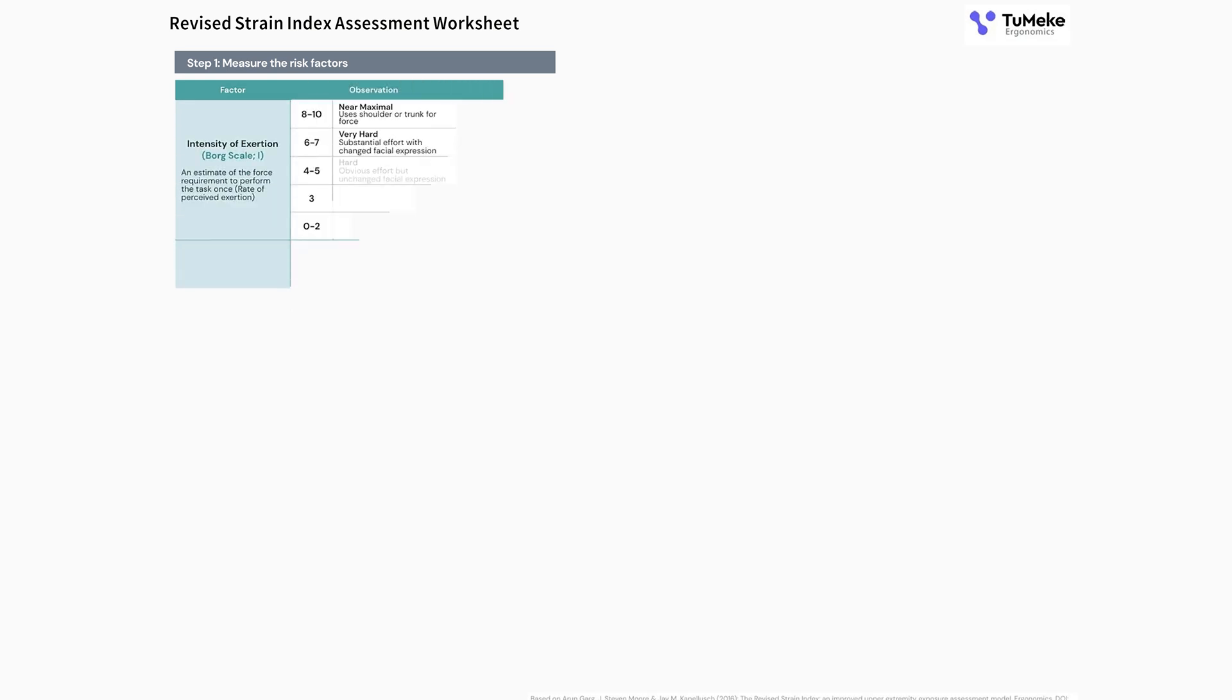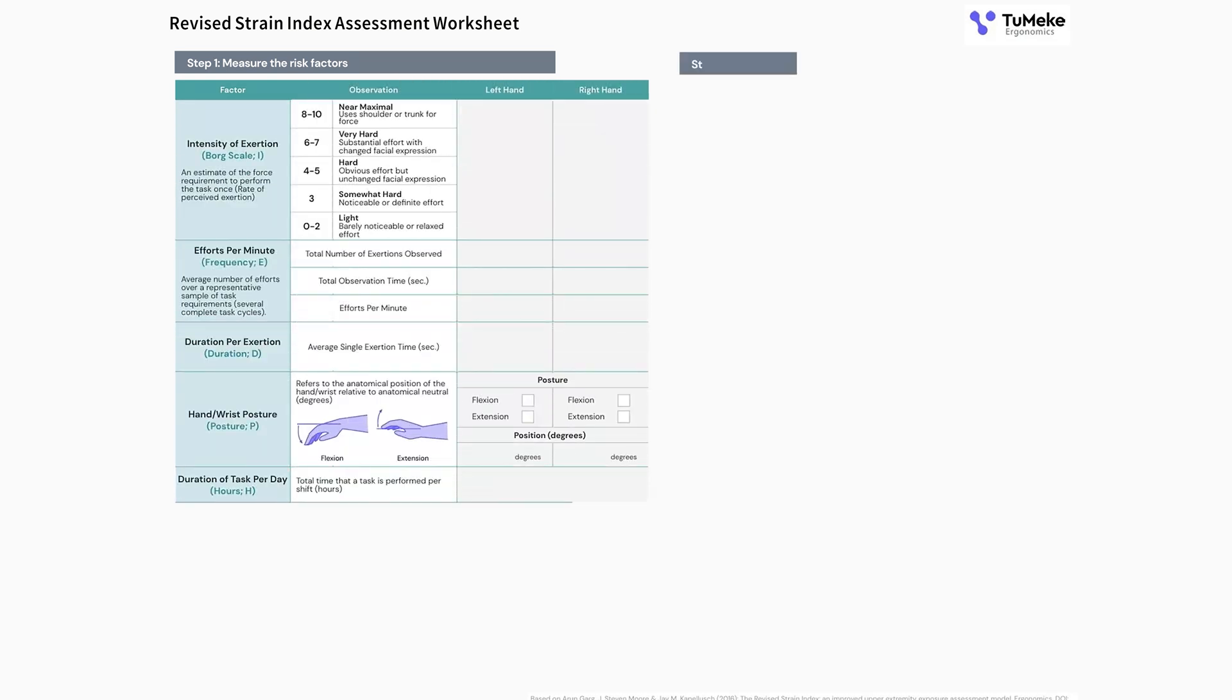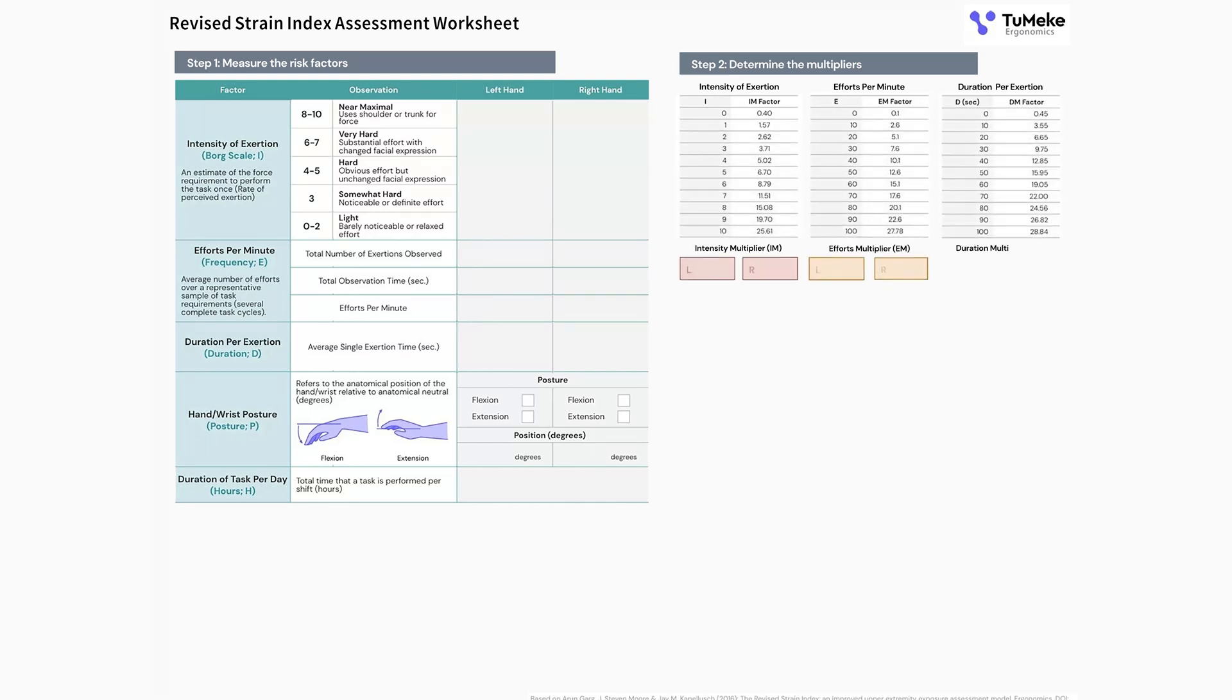It was originally designed in 1995 and then updated recently. We call it the RSI now for short. And it assesses the risk of upper extremity injuries, especially cumulative trauma and repetitive stress injuries. It allows us to rank each injury in terms of priority, and it allows us to review our intervention after we've done so, so we can compare it to our initial rank.